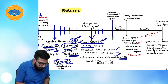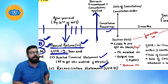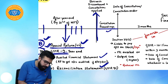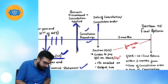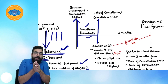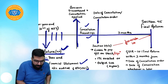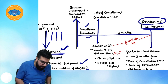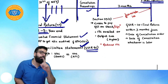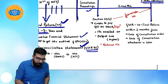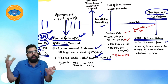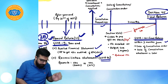If you close your business, cancellation proceedings begin under Section 29. During the cancellation period, registration is suspended. Once the cancellation order is issued, you must file your final return (Section 45) within three months of the date of cancellation or the cancellation order, whichever is later. In the final return, you declare what you are liable to pay under Section 29(5). The final return is filed in GSTR-10.